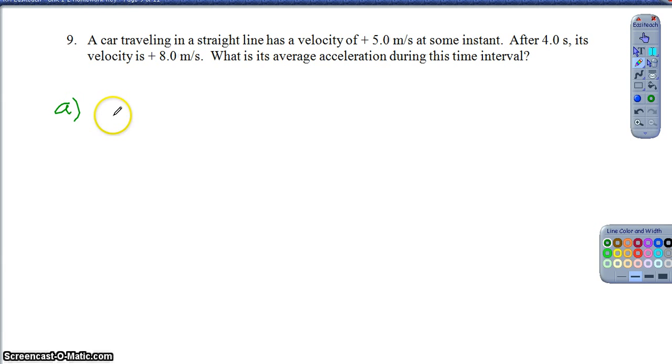The definition for the average acceleration is change in velocity over change in time. So in this instance, I would say my final velocity of positive 8 minus my initial velocity of positive 5 divided by the 4 seconds that it took, so I'd have 3 over 4. And that would give me an acceleration of 0.75 meters per second squared.